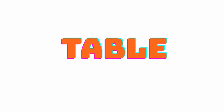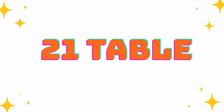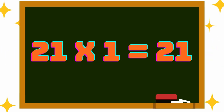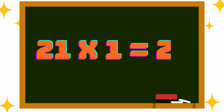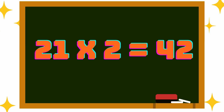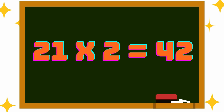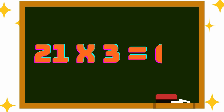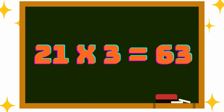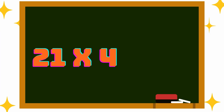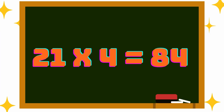Hey cuties, let's see tables. Focus 21 to 25. Table 21: 21 into 1 is 21, 21 into 2 is 42, 21 into 3 is 63, 21 into 4 is 84.